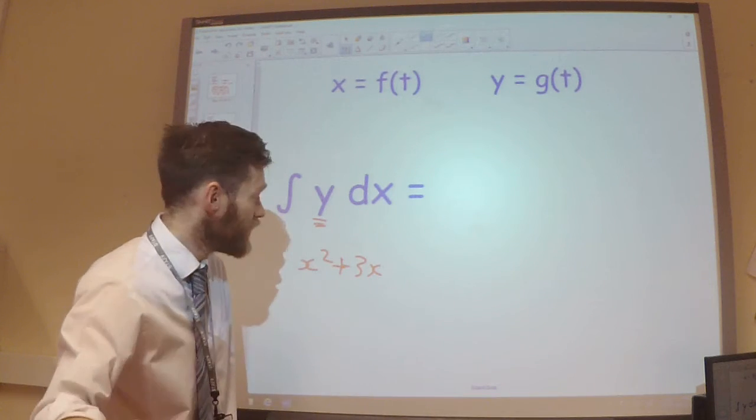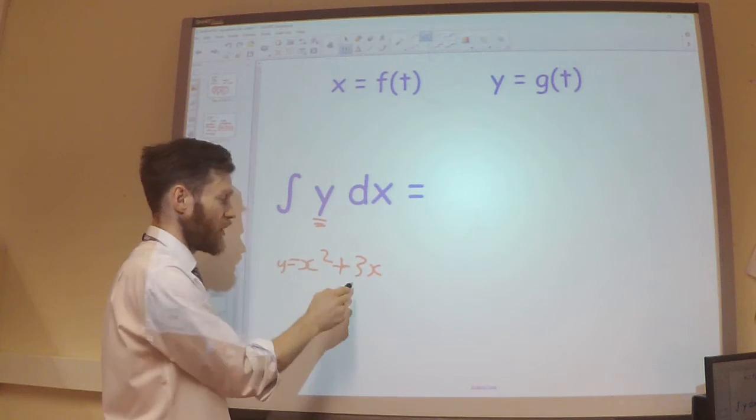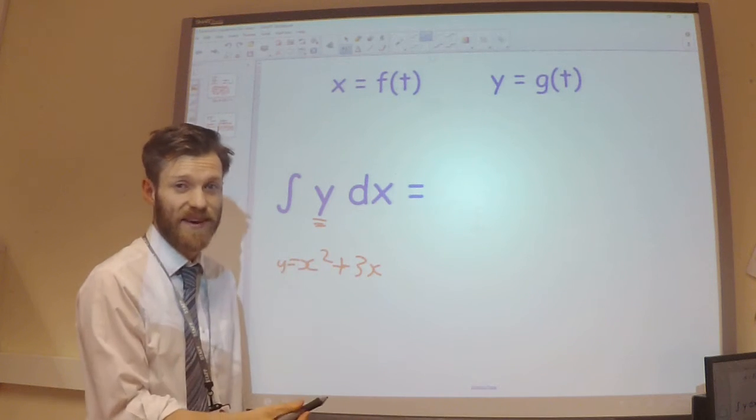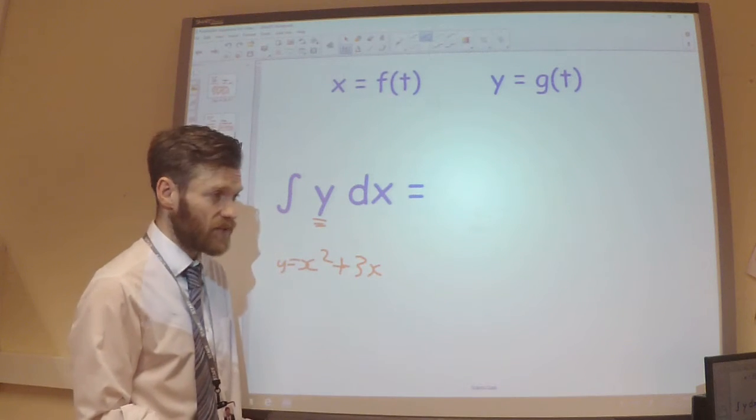So if we have something like x squared plus 3x, we would integrate that y function with respect to x to find the area underneath it. We'd substitute our limits in to get the actual area.